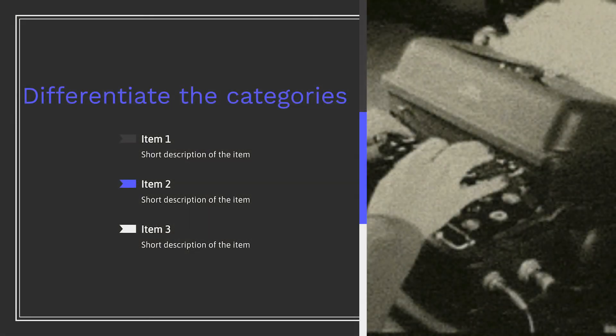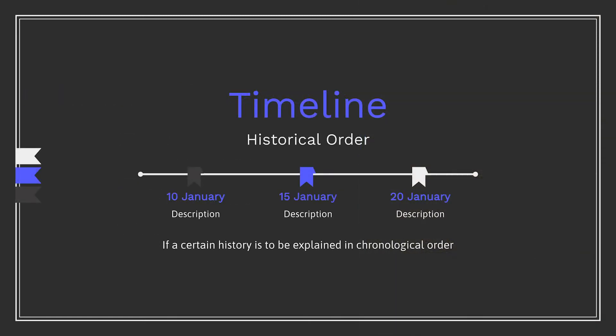Seven, a different categories slide. This is where you can create a table with bullets to explain or differentiate the categories or subtitles of your general topic. Seeing the different categories separated may help the audience better understand the outline of your presentation. Eighth, a timeline slide. This helps set the historical background if a certain history needs to be explained in chronological order.